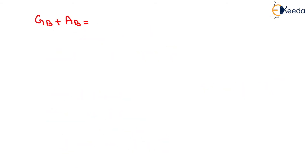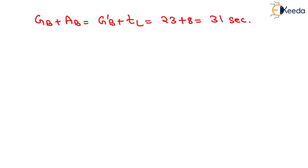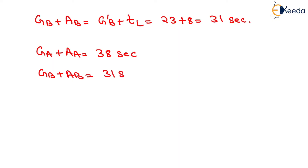Green time plus amber time for road B equals effective green time of road B plus total loss time, which is 23 plus 8, giving 31 seconds. That is all about this numerical. Thank you very much, students.